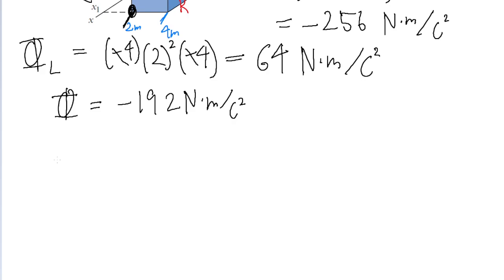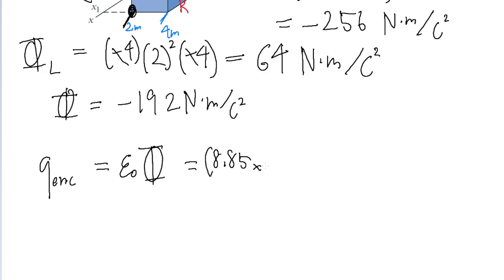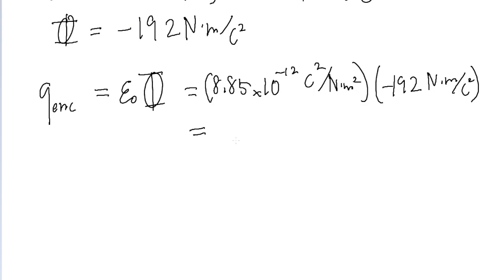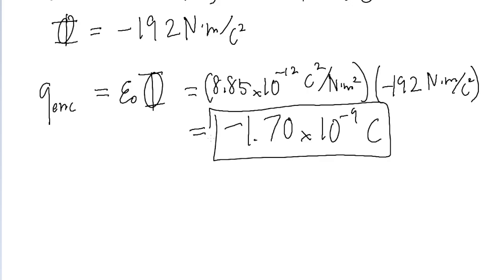Now the problem is asking for the enclosed charge within the Gaussian surface. To find this, we'll apply Gauss's law, which states that the enclosed charge within a Gaussian surface is equal to the electric constant multiplied by the net electric flux through that surface. The electric constant has a value of 8.85 times 10 to the power of negative 12 coulombs squared per newton meters squared, multiplied by the flux we just found of negative 192. Putting this into a calculator, we find a value for the enclosed charge of negative 1.7 times 10 to the power of negative 9 coulombs — that is the charge enclosed within the cube.